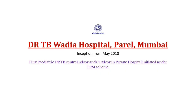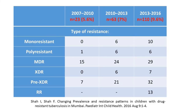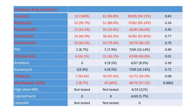We established the pediatric DRTB center with RNTCP at Wadia Children's Hospital in May 2018 — the first such center in the country catering to pediatric DRTB. Looking at our TB clinic data from 2007: in the first three years the percentage of DRTB was around 5.6%; 2010 to 2013 it went up to 7%; 2013 to 2016 it went up to 9.6%. So 9.6% of the total TB patients we see are going to be MDR-TB.